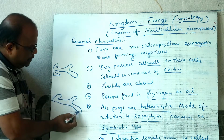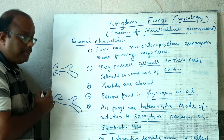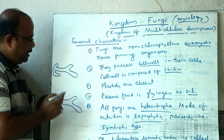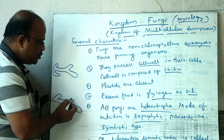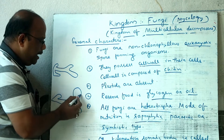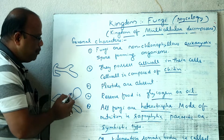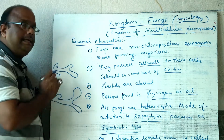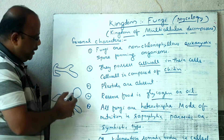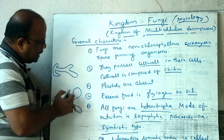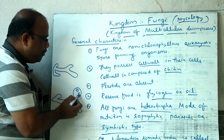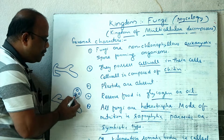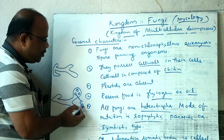The whole somatic body of a fungus is called mycelium. Mycelium is composed of branches called hyphae. During asexual reproduction, some hyphae enlarge to form a sac-like structure called a sporangium. Inside the sporangium, a number of cells are formed, and each cell is called a spore.